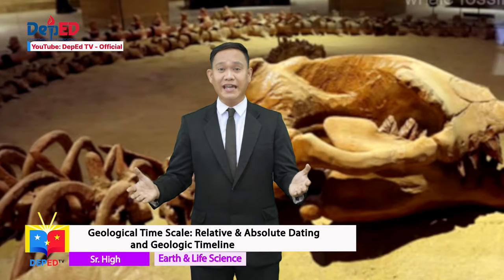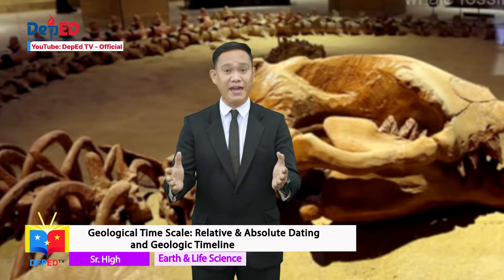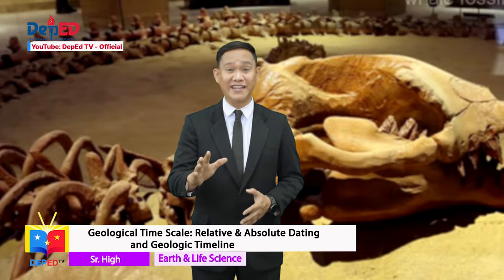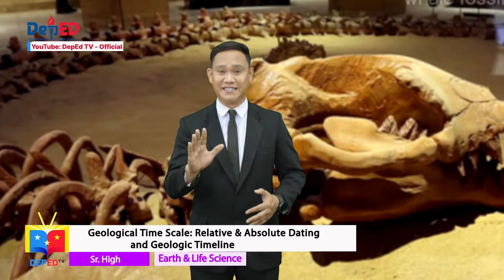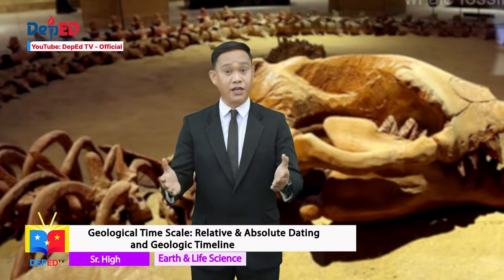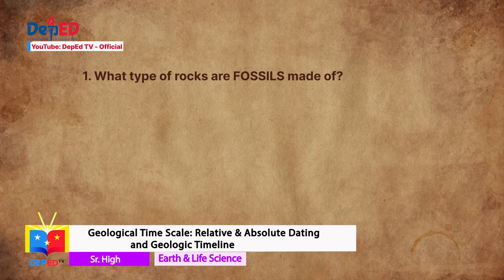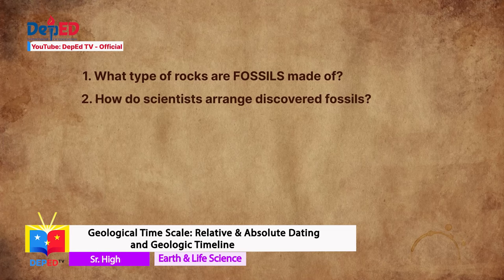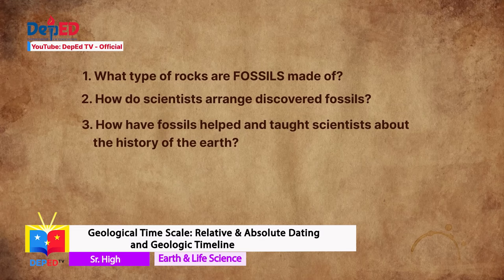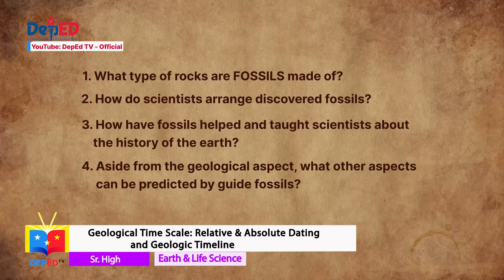Now, after hearing the story, let us answer the following questions. Get your paper and pen to copy the questions. Don't worry if you cannot answer right away, because you can watch this episode again on DapidTV YouTube channel. Are you ready? Here are the questions. Number one: What type of rocks are fossils made of? Number two: How do scientists arrange discovered fossils? Number three: How have fossils helped and taught scientists about the history of the Earth? Number four: Aside from the geological aspect, what other aspects can be predicted by guide fossils? After answering those questions, ask your parents, guardians, or friends to assess your work.